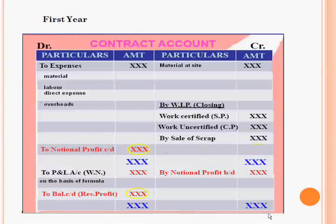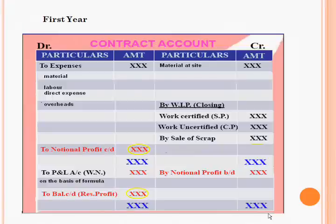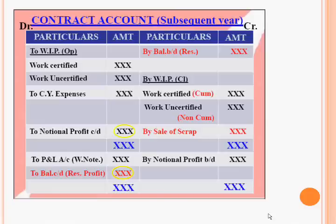This is the proforma of the first year of the contract account. On the debit side we write the expenses; on the credit side we write work certified, work uncertified, and material at site. The difference between the two sides will be the notional profit, and the notional profit will be transferred to the profit and loss account according to the formula already discussed.